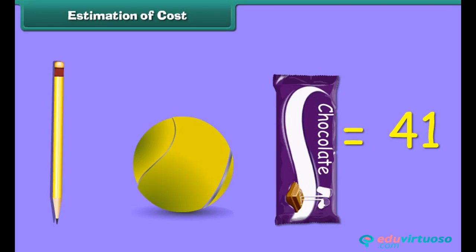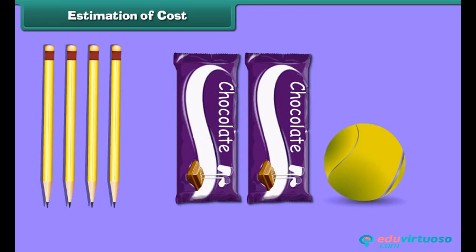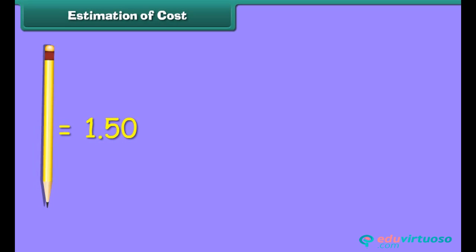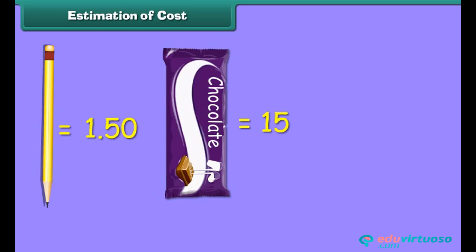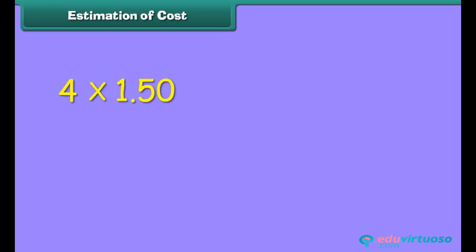Estimation of cost means calculating the total cost of different items. What will be the total cost of four pencils, two chocolates, and one tennis ball? The unit cost of a pencil is 1 rupee 50 paisa, the unit cost of a chocolate is rupees 15, and a tennis ball is rupees 5.